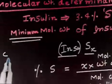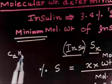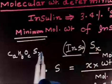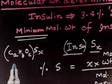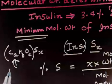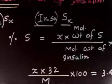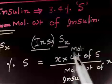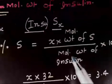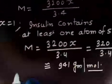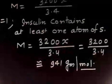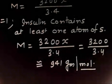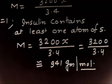To summarize: insulin contains various atoms — carbon, hydrogen, oxygen — along with x atoms of sulfur. We wrote the formula in condensed form as Insu·Sx, then used the percentage of sulfur formula: (x × atomic weight of sulfur) / molecular weight of insulin × 100 = 3.4%. Solving this gives the minimum molecular weight of insulin as approximately 941 g/mol.